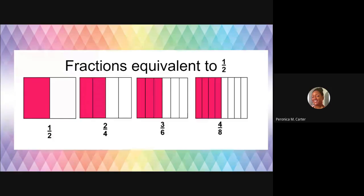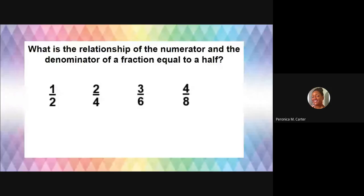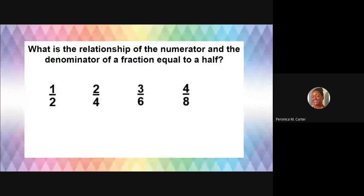One half is equal to two fourths, it's also equal to three sixths, which is also equal to four eighths, and we could go on. There's a pattern here — let's see what it is. What can we tell about the numerator and the denominator of a fraction concerning a half? One and two — that's our first one. What is that relationship? Two and four. Three and six.